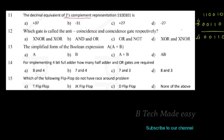We convert to decimal. The place values are 2 raise to 0, 2 raise to 1, 2 squared, 2 cubed, 2 raise to 4. So: 1×2⁰ + 1×2¹ + 1×2³ + 1×2⁴ = 1 + 2 + 8 + 16 = 27.